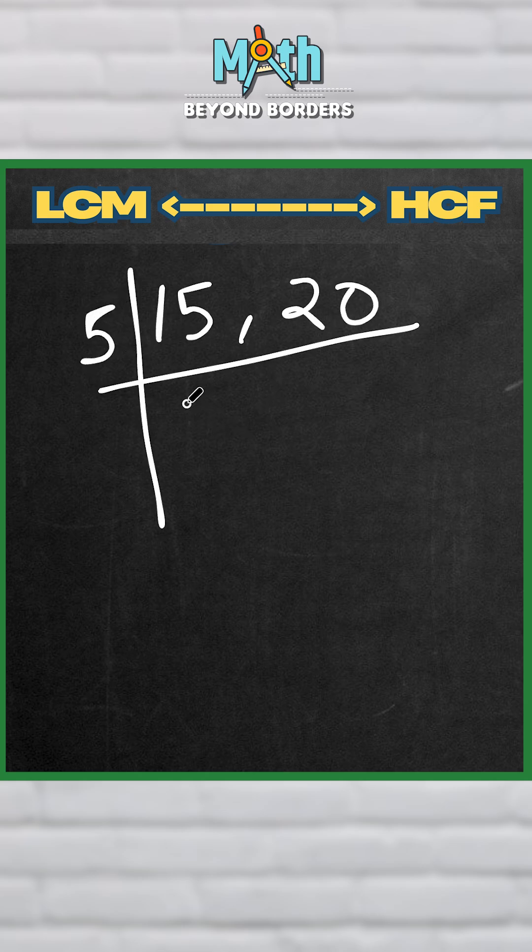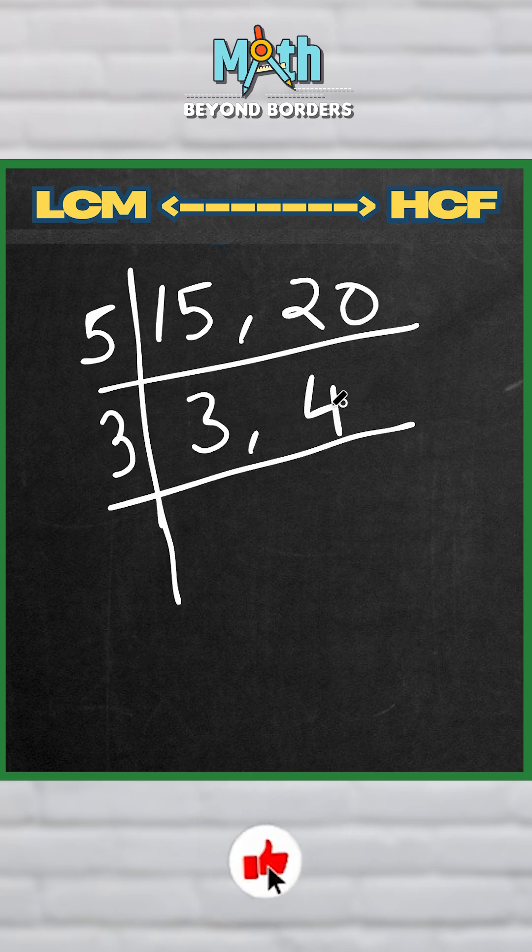So 5 times 3 is 15, 5 times 4 is 20. Now, just for the sake of simplicity, let's also keep going, keep going with the division. For example, I know 3 cannot divide 3 and 4 both, so let's just divide 3 for now and make it a 1, and 4 comes down as it is.